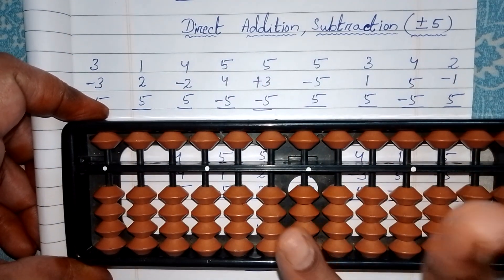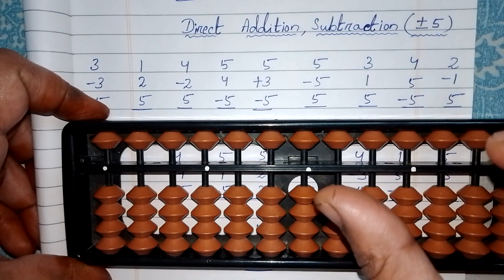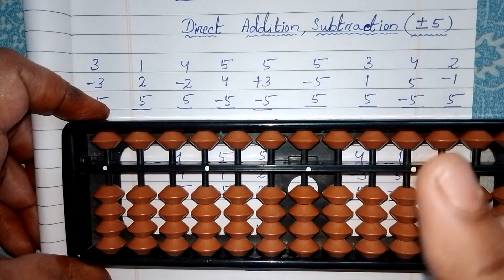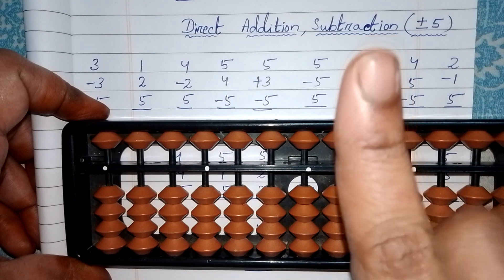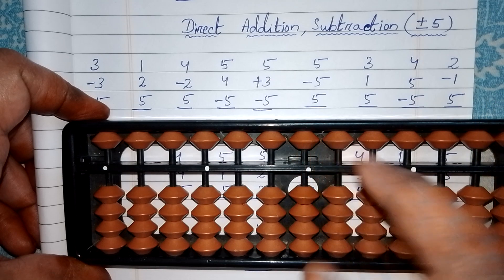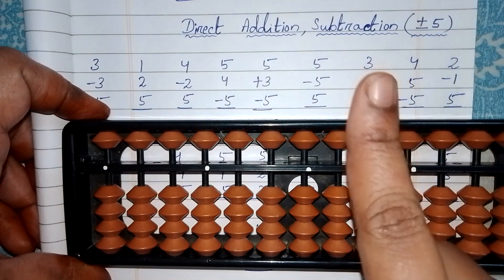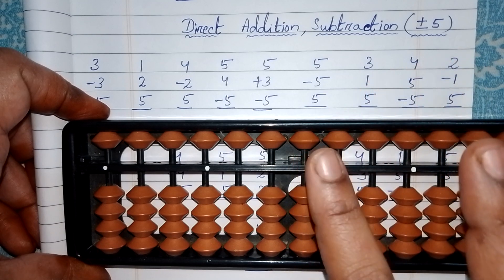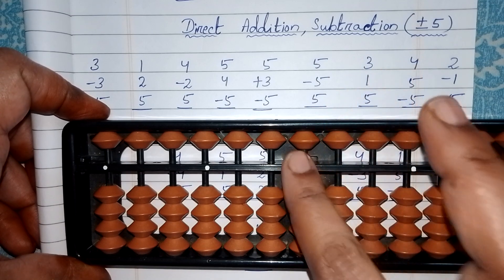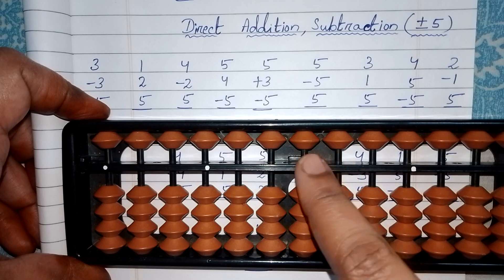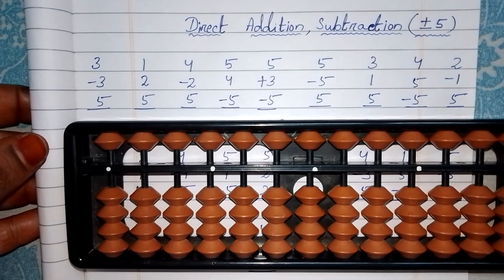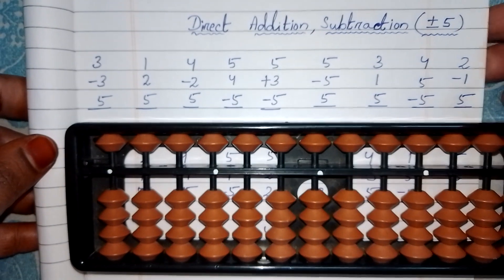While doing the addition of lower beads you have to use your thumb finger. While doing subtraction of lower beads you have to use your index finger. While doing the addition of the upper bead we have to use index finger, and while doing subtraction of the upper bead we also have to use index finger. So for both addition and subtraction of five, we use only the index finger.